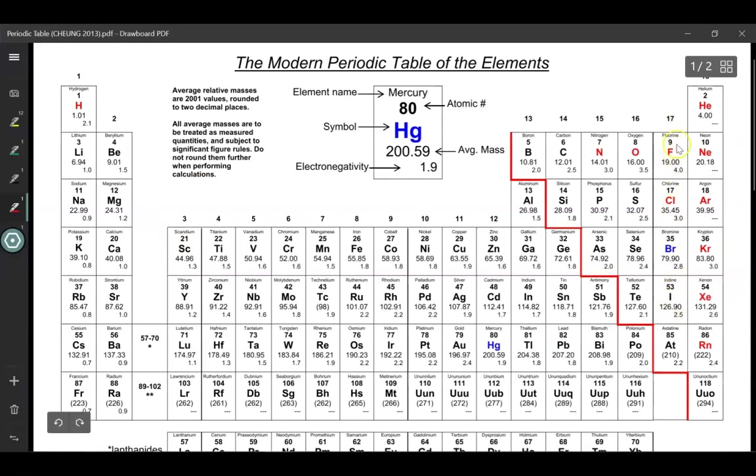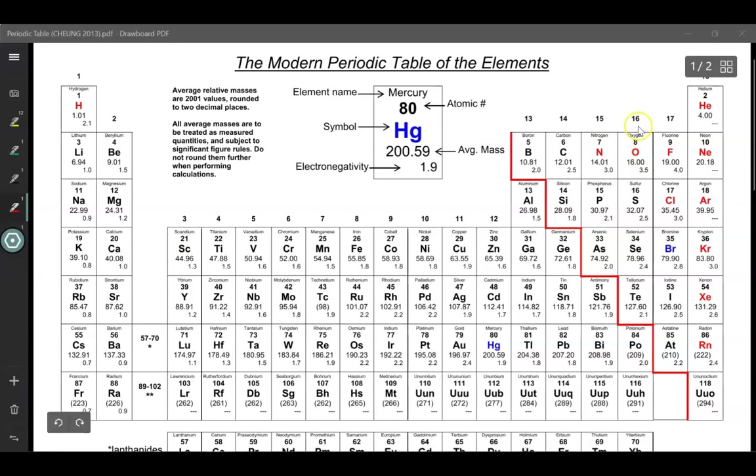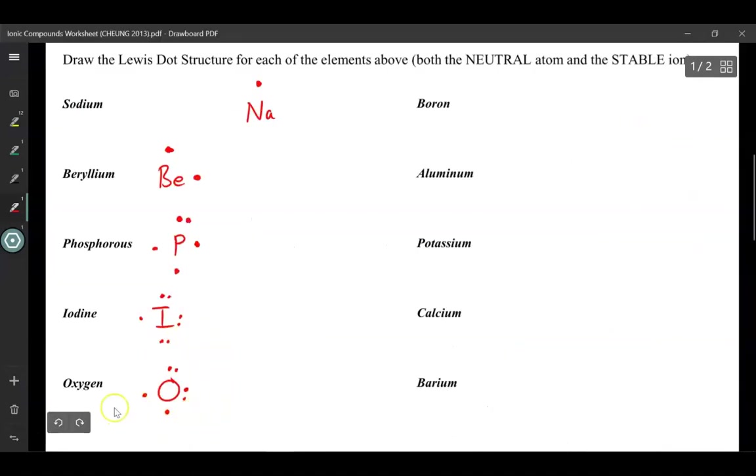Iodine is in group 17, or 7A, so it has 7 valence electrons. So 1, 2, 3, 4, 5, 6, and 7. Oxygen is in group 16, or 6A, and that is what its Lewis diagram would look like. And these are the remaining answers.